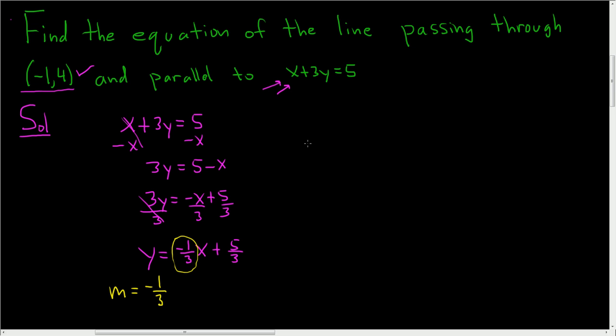To finish, we'll use the point slope formula for a line. So y minus y1 is equal to m times x minus x1. So in this problem, y1 is 4 and x1 is negative 1. So y minus 4 equals m is negative 1 third. And then x minus negative 1, so that will be x plus 1. So y minus 4 is equal to negative 1 third times x, which is negative 1 third x. And negative 1 third times 1 is negative 1 third.